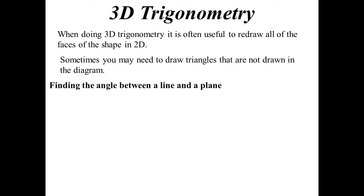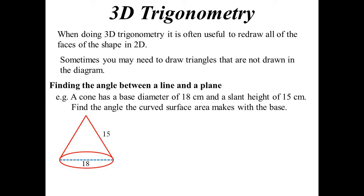Basically, when you're talking about 3D trig, angles that you find, you can find an angle between a line and a plane. So something like this: the cone has a base diameter of 18 centimeters, slant height 15. Find the angle that the curved surface area makes with the base. Now, how do we find that? Well, the curved surface area, in reality, it's just the slant edge, the angle the slant edge is making with the base. So it's like saying this line is making an angle with the base.